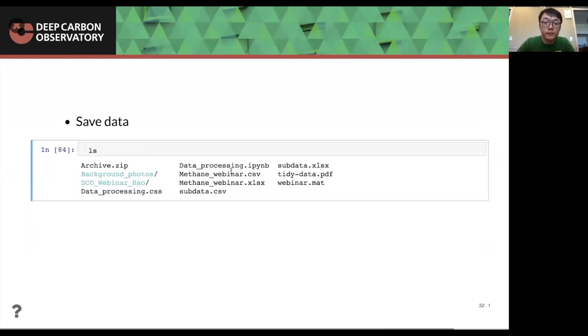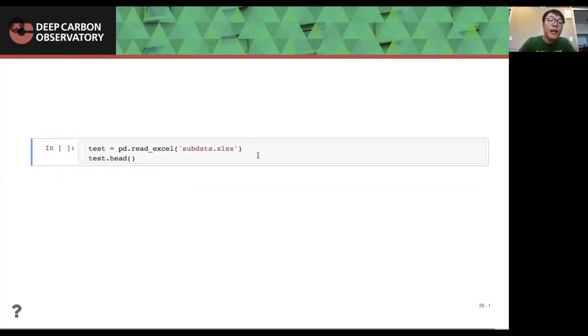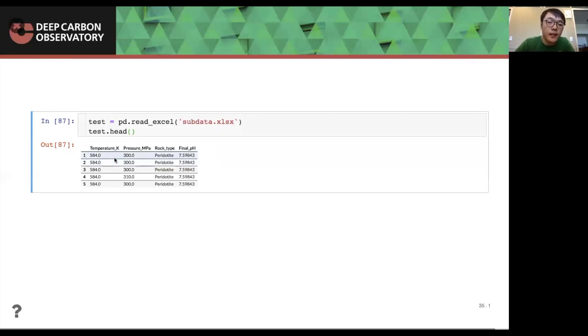After that, I will show you how to save data. I forgot to clean up this. So here is save data. We can use the data frame and the to CSV or to Excel to save the data file. And in the single quote is the file name is CSV or dot XIL, XLS X. And after running this, the data will be saved. And to test whether we save the data correctly, we can read in the sub data Excel file again, and test it, and we can see that the test file has reading the data file successfully. So which means we saved the data file in the correct way.